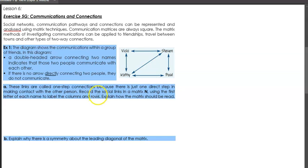So what we're going to do is, these links are called one-step connections, because it takes one step to get from one person to the other. Record the social links in the matrix capital N, using the first letter of each name to label the columns and rows. So capital N is going to equal to, and we're going to have the four people. In this case we're going to have Vicky, Stephen, Cathy and Paul. And that will also be written on the top as well. And this will be a four by four matrix, because there are four people.